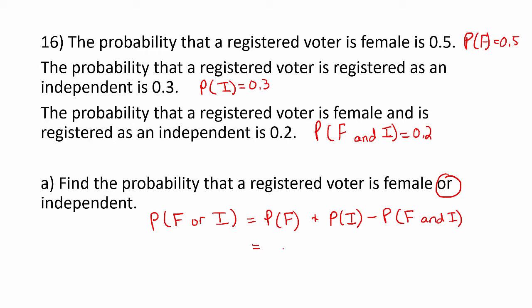We know these three probabilities to be 0.5, 0.3, and 0.2. And the computation gets us to 0.6 for that probability.